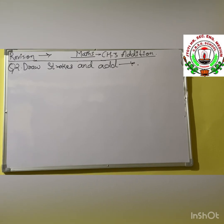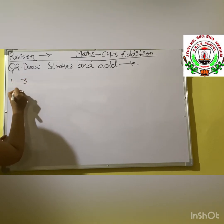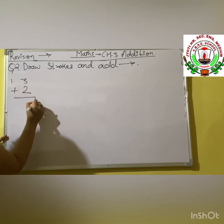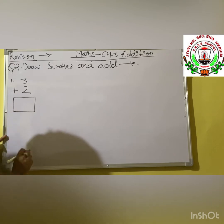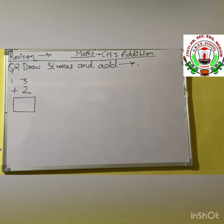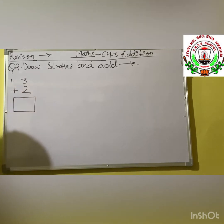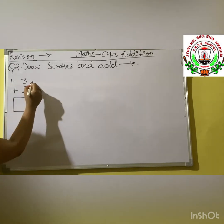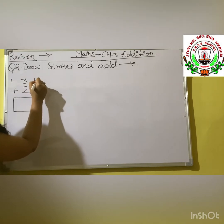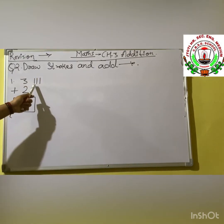First number given is 3 plus 2. There is a blank box given. We have to add 3 plus 2. First we draw strokes for the first number: 3. So we draw 1, 2, and 3. Here we have drawn our 3 strokes.